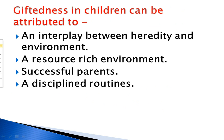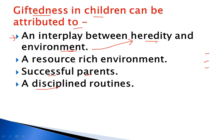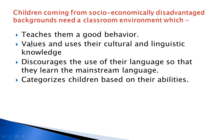The next question is: giftedness in children can be attributed to which of the following? The options are: an interplay between heredity and environment, a resource-rich environment, successful parents, or disciplined routines. Giftedness can occur only when both heredity and environment play a role. As I mentioned in the first video, both are balanced and have a good effect, and then a child may be a gifted child. So the correct answer is an interplay between heredity and environment.